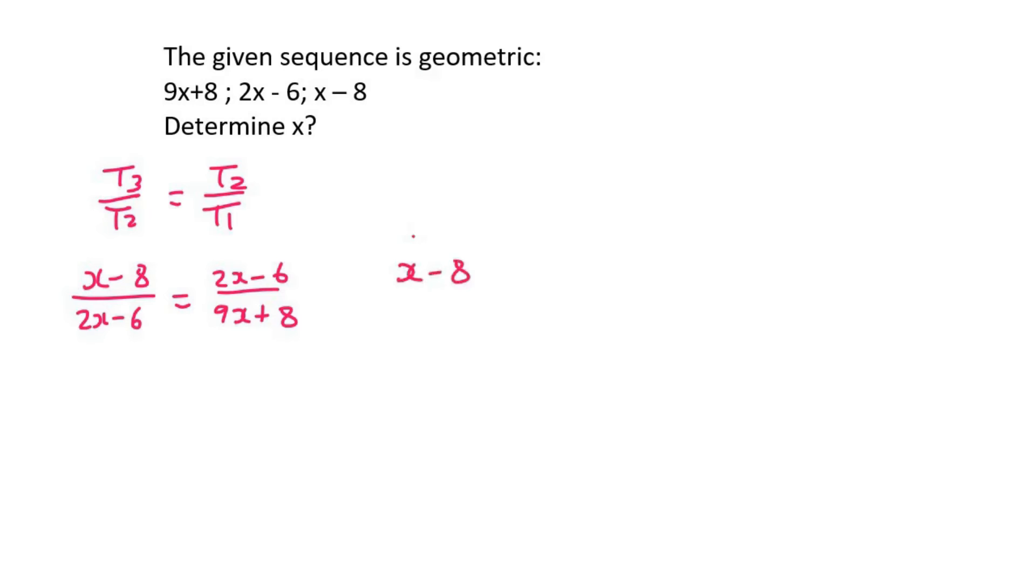We'll end up with X minus 8 multiplied by 9X plus 8 equals 2X minus 6 times 2X minus 6. Multiplying out the left hand side would eventually give 9X squared minus 64X minus 64. Then on the right hand side you'll get 4X squared minus 24X plus 36.